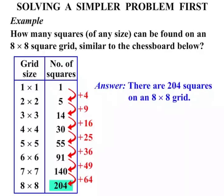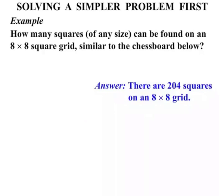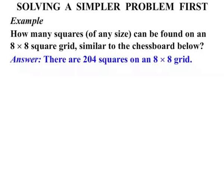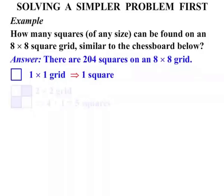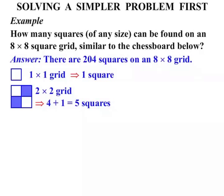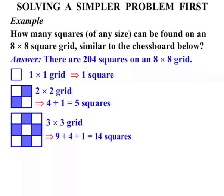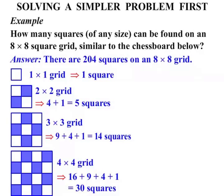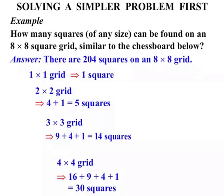So let's write our answer. There are two hundred and four squares on an eight by eight grid. Now let's put our answer up there. I'm just going to show you another technique. Now we're just going to bring our working out. One by one grid we got one square. The two by two grid we did our working. The three by three grid and the four by four grid. That's all stuff that we worked out before. We're just going to get rid of the diagrams now and just bring it across.